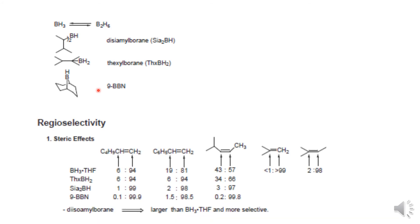Some important reagents include BH3 as the normal reagent, then disiamylborane, thexylborane, and 9-BBN. These are different formats of boron reagents that are important and famous. We'll see how regioselectivity and steric factors affect the addition reaction and the product.